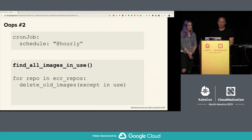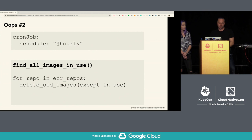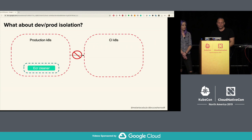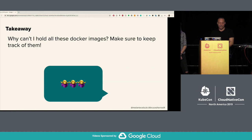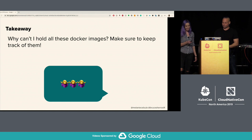We needed to rewrite find-all-images-in-use to find all images in use across all clusters. That presented a new problem: where do you run ECR Cleaner? You want isolation between Kubernetes clusters, but ECR Cleaner needs to be a global singleton knowing about all images in all clusters. We solved this by creating a management cluster with permission to access the API servers of every other cluster, with a stricter review process for services running there. Takeaway: make sure to keep track of your Docker images.